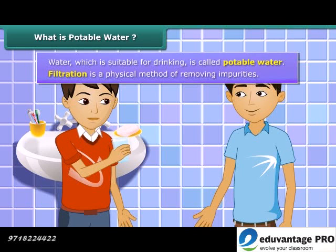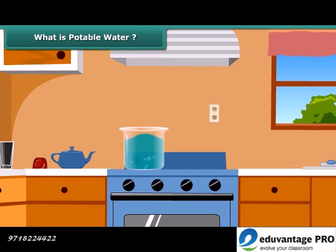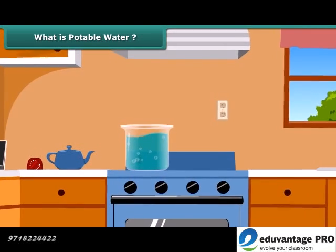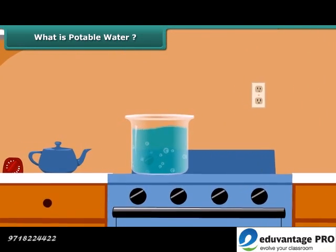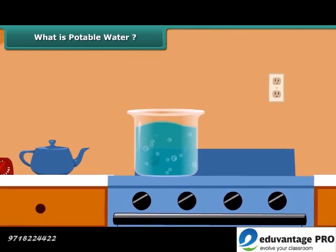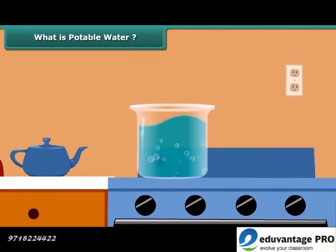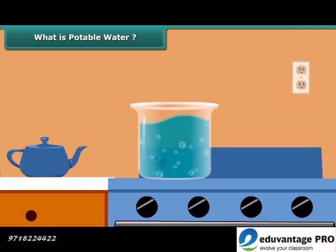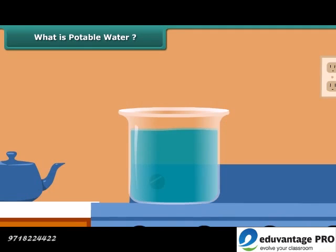Water which is suitable for drinking is called potable water. Water can be made safe for drinking. Can you tell why we boil water before drinking? Because boiling kills the harmful microorganisms present in the water. Another method of purifying water is chlorination — it is a chemical method done by adding chlorine tablets to the water.